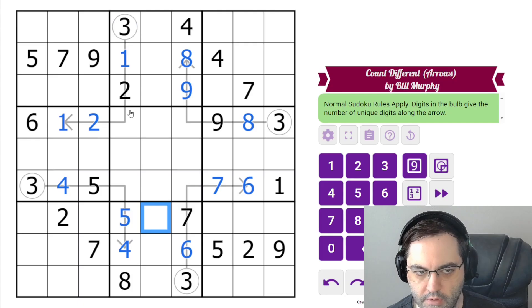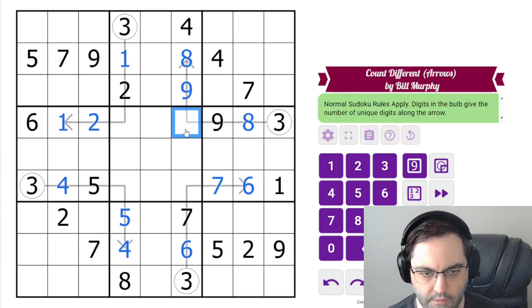And now we're basically done with the arrows. Whatever this digit is, we're going to have three distinct digits.